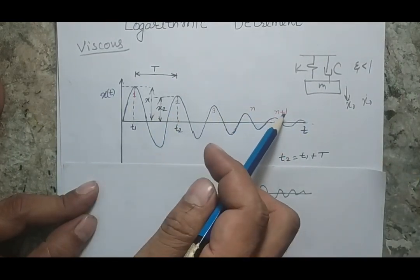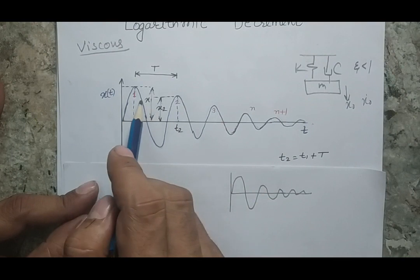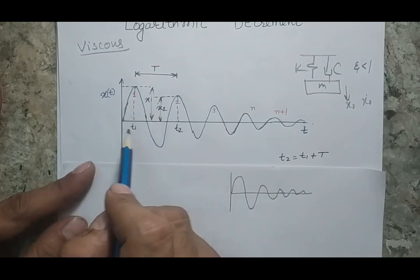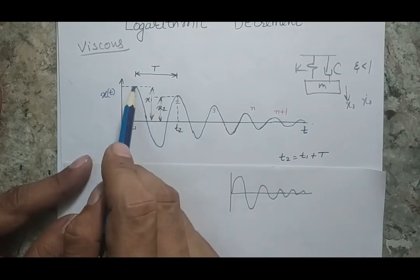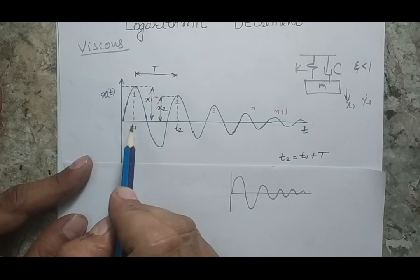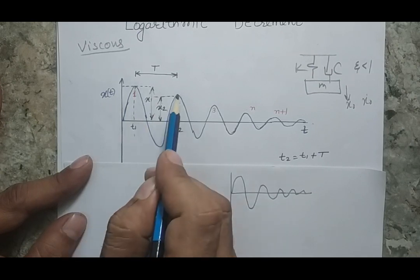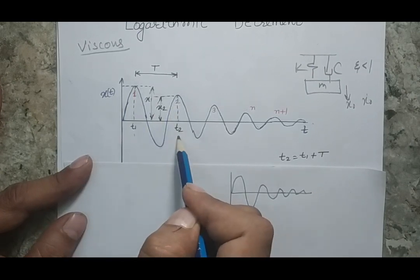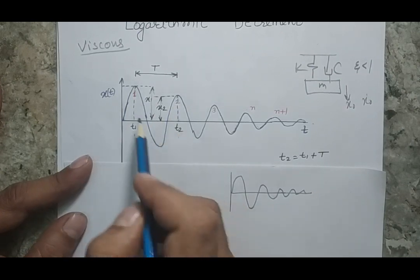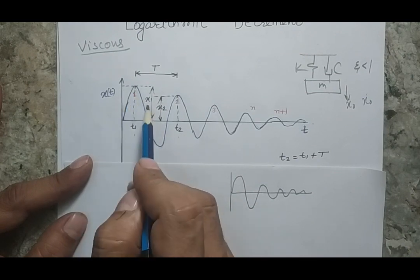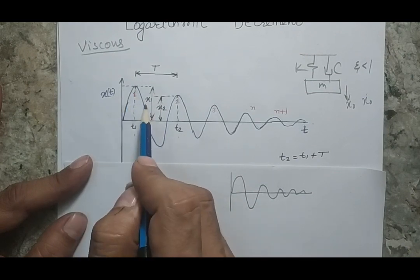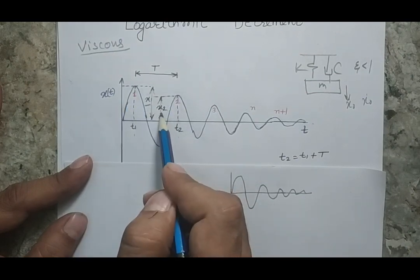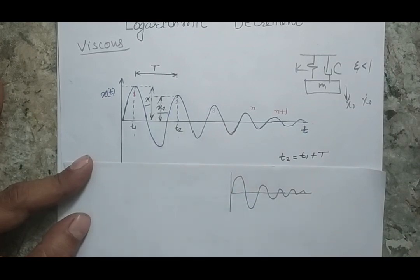Here 1, 2, 3, n, and n+1 are the number of peaks. I assume that at the first peak the time is t1, and at the second peak the time is t2. The amplitude at the first peak is defined as x1, and the amplitude at the second peak is defined as x2.